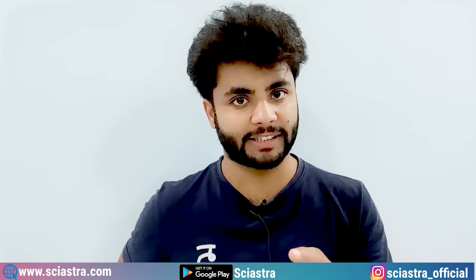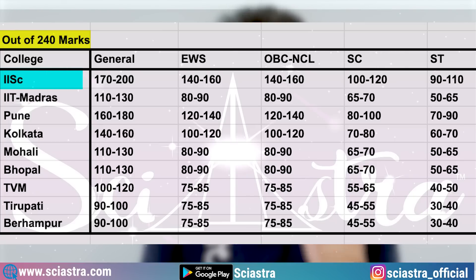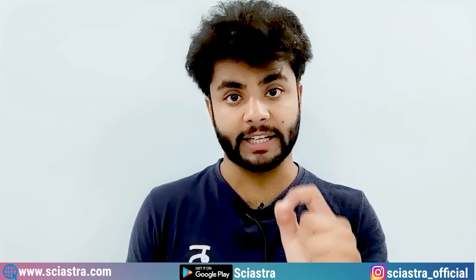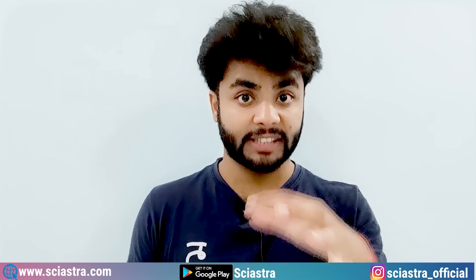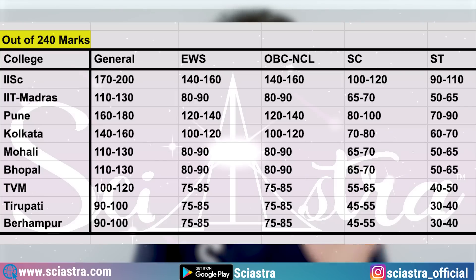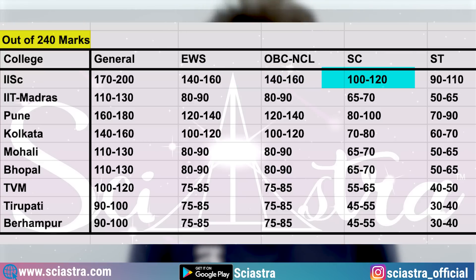As you can see on the screen, for IISc Bangalore General category you must get a minimum of 170 to 200 marks out of 240. All of this data is based on the IAT 2023 exam pattern, which is out of 240 marks — earlier it was 180 marks. For IISc Bangalore: General 170–200, EWS 140–160, OBC NCL 140–160, SC 100–120.